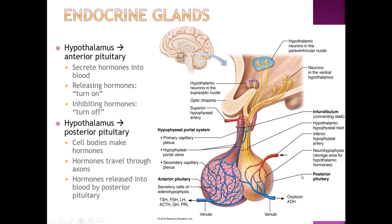The relationship between the hypothalamus and the posterior pituitary is quite different. Cell bodies of neurons up in the hypothalamus actually make the hormones, and the axons extend down the stalk of the infundibulum, with the hormones finally released by the axon terminals into the posterior pituitary, where they are stored. So the posterior pituitary doesn't make any hormones itself, whereas the anterior pituitary does when stimulated by a releasing hormone — two very different communication systems.